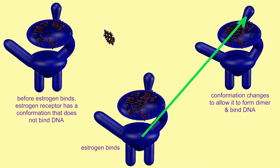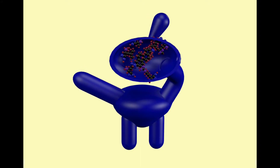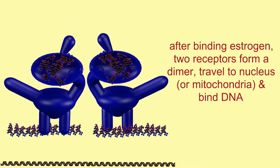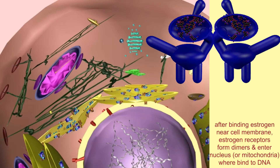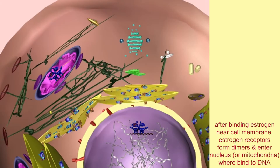When estradiol binds this receptor, the protein receptor changes its shape — its conformation — and adopts a conformation which will now allow it to bind DNA, something that it cannot do, unless mutated, prior to estradiol binding. The estrogen receptors typically bind the hormone estrogen near the cell membrane and then form dimers, or complexes of two copies of the same protein. This dimer with estradiol bound to it can now enter the nucleus, or even the mitochondria, where it can bind to DNA.